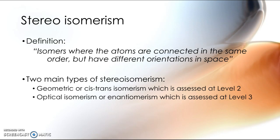There are two types of stereoisomerism. At Level 2 in NCEA you'll be assessed on your knowledge of geometric or cis-trans isomerism, which I'm going to discuss in this video. At Level 3 you'll be assessed on optical isomerism, sometimes known as enantiomerism, which is part of the Level 3 curriculum and will be covered in my next video.